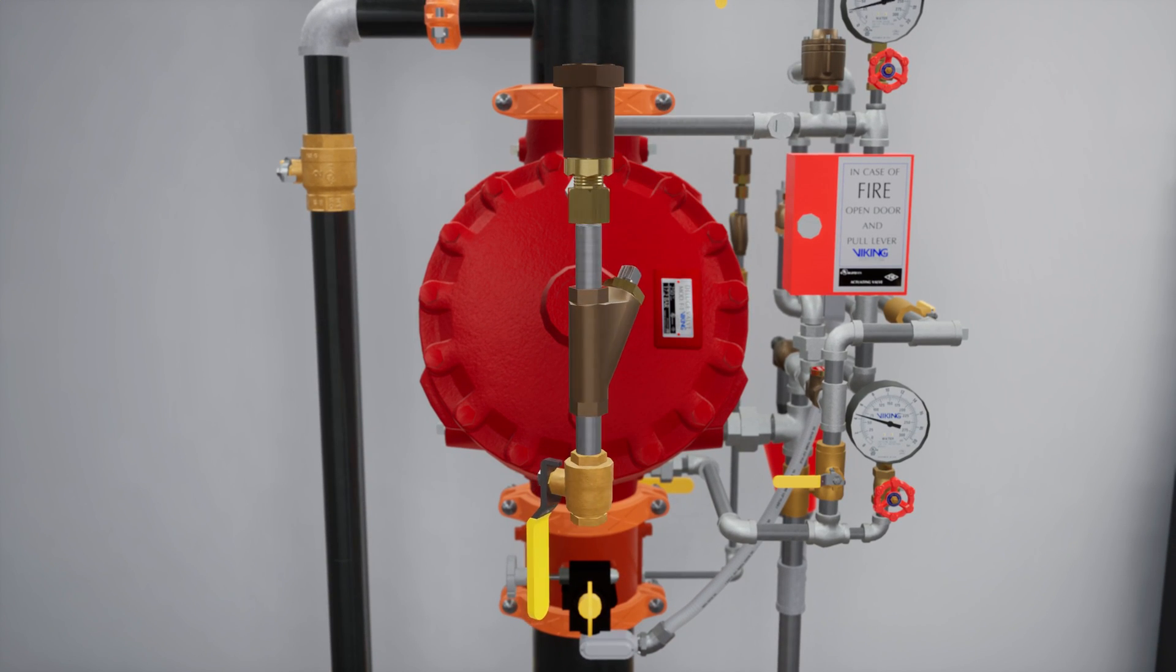The prime line directs water to the prime chamber of the deluge valve. The prime line consists of an open priming ball valve, a Y strainer, a restricted orifice, and a check valve.